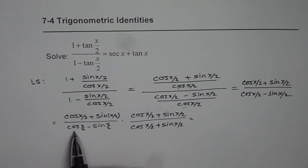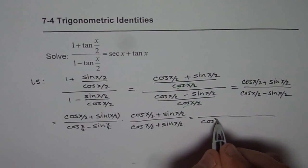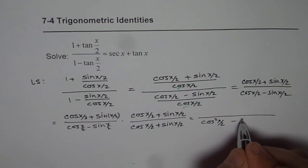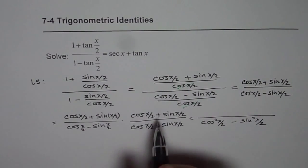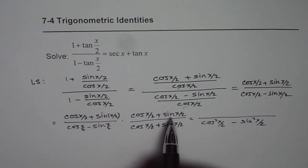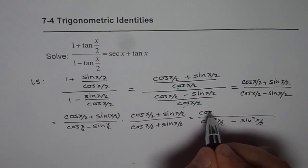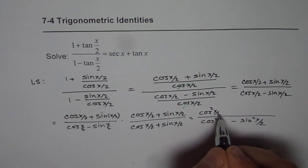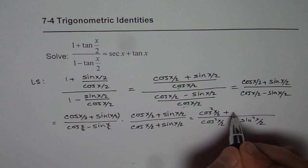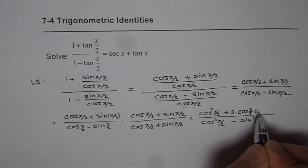In the denominator we get cos^2(x/2) - sin^2(x/2). In the numerator we get (a + b)^2, so when you multiply these we get cos^2(x/2) + 2cos(x/2)sin(x/2) + sin^2(x/2).